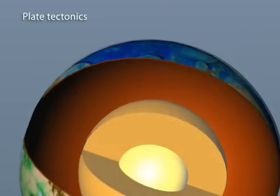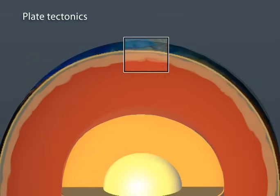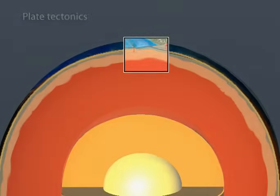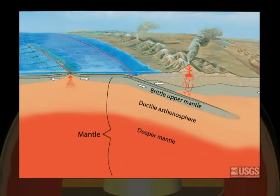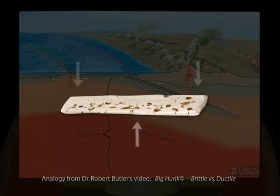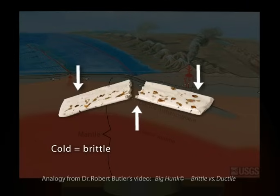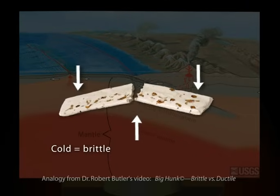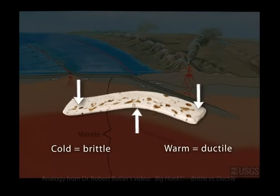But back to plate tectonics. The cool uppermost part of the mantle is brittle. How can the top of the mantle be brittle when the same material in the asthenosphere is ductile? A big hunk candy bar can be used as an analogy. Like the uppermost cool mantle, when the big hunk is cold, it is brittle and breaks when bent. When you heat it up, it becomes ductile or plastic and can bend and flow.